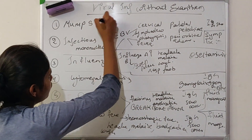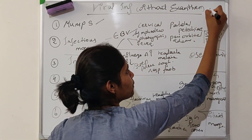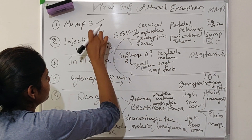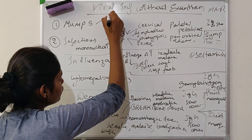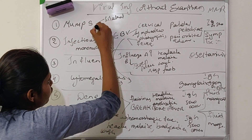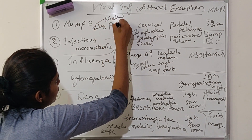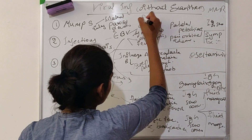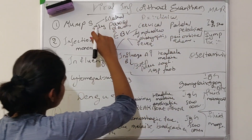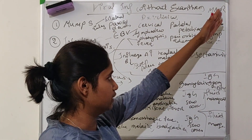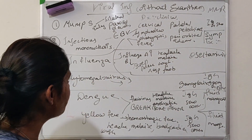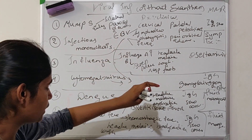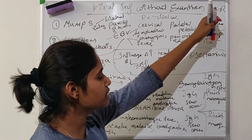Let's see mumps. The treatment for mumps is the MMR vaccine — that is measles, mumps, rubella vaccine. Mumps affects the parotid glands, causing bilateral enlargement of the parotid glands. Diagnosis is mostly clinical. Treatment is the MMR vaccine.